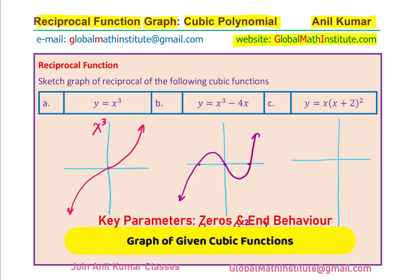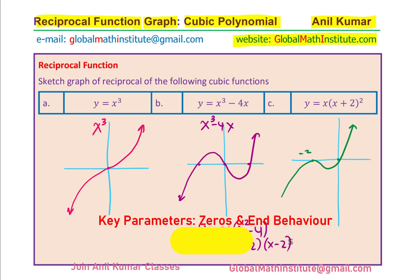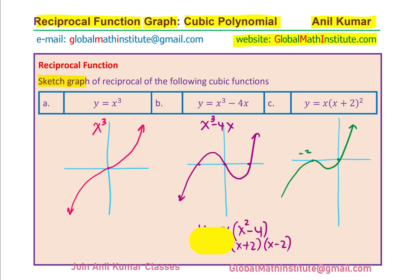The third graph is x times (x plus 2) whole square, which has two zeros: one at 0 and the other at minus 2. At minus 2, we have a double zero, so the graph touches the x-axis there without crossing. That is the rough sketch of the third function. Our exercise is to sketch the graphs of their reciprocals.